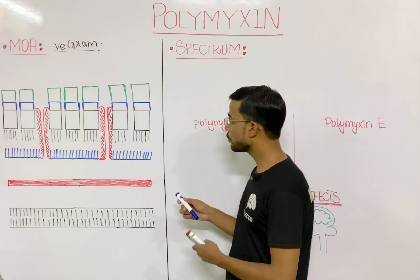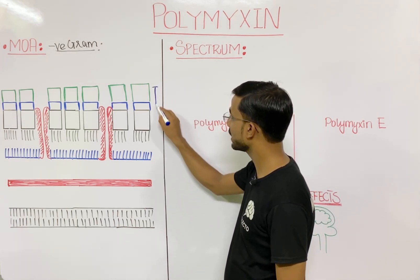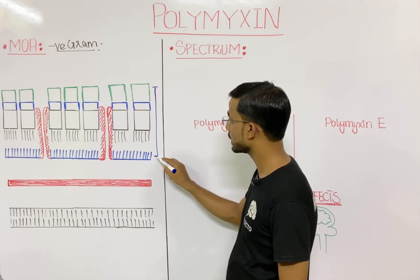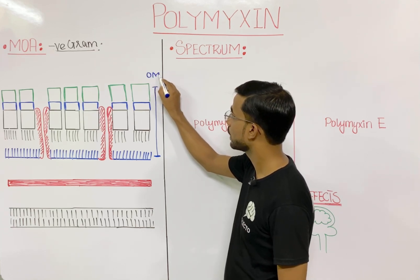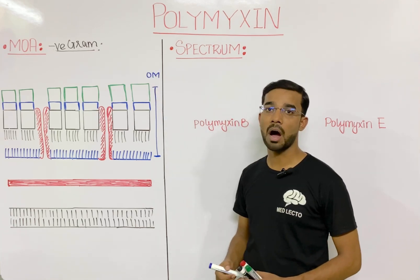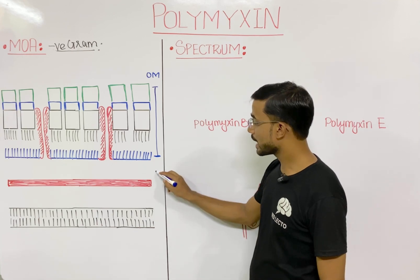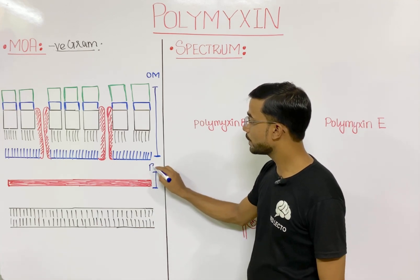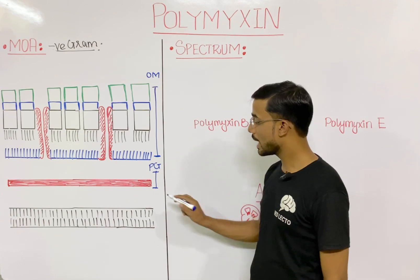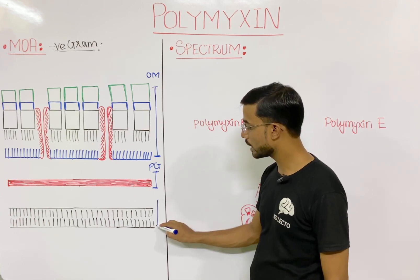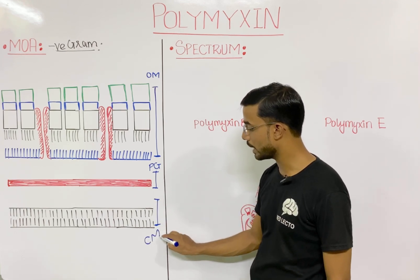The outermost component of the gram-negative bacteria is the outer membrane. The second component is the peptidoglycan, and the last component is the cell membrane.